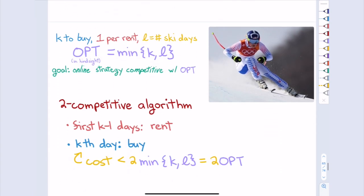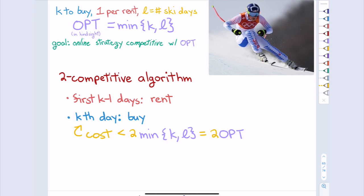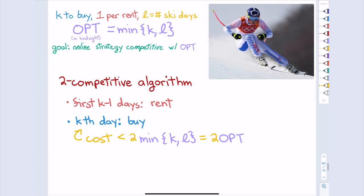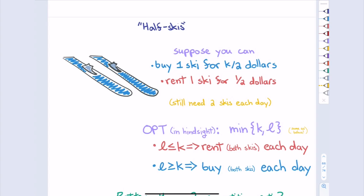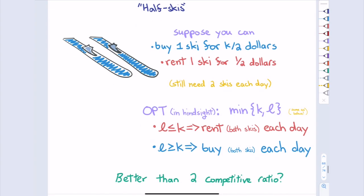To do better, we relax the model: imagine you can buy or rent one ski at a time, so buy one ski for K/2 and rent one ski for $0.50. OPT hasn't changed — you'd still rent until it makes sense to buy. With this extra freedom, can we beat a 2-competitive ratio? The answer is yes.